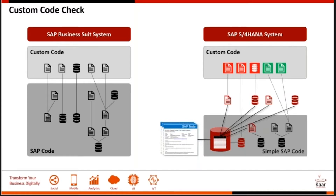You also have SAP Solution Manager's Custom Code Lifecycle Management, which retrieves the usage data and gives you a graphical presentation of how much ABAP code is used, helping you prioritize. From our experience, you should monitor your business processes for a longer period of time on production. You'll have to turn on key switches so you start tracking them. If you can do this for at least a three-month period, it gives you the right statistics and helps you clean up the custom code a lot better.